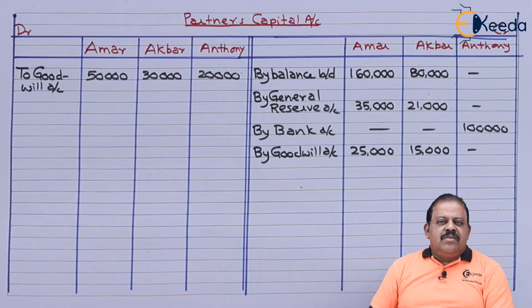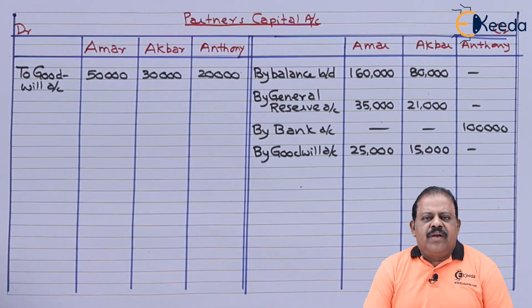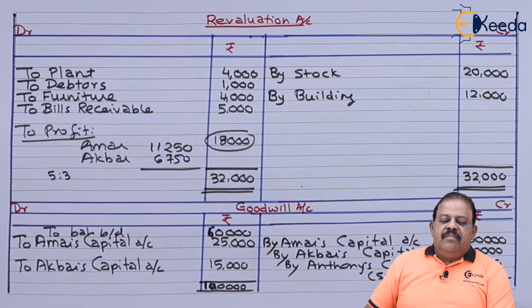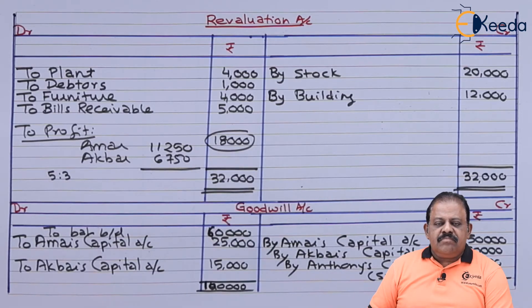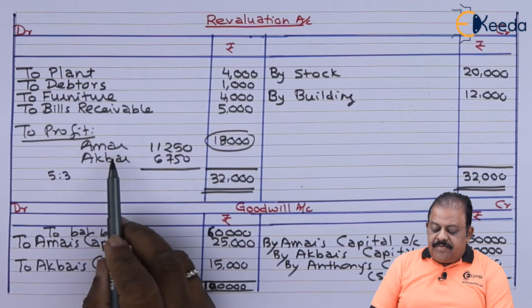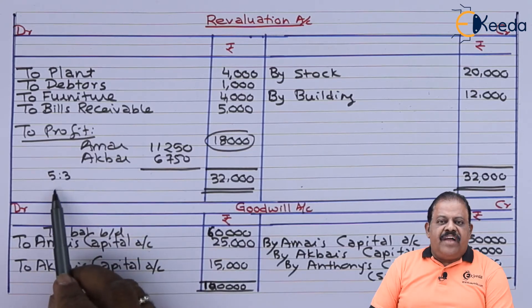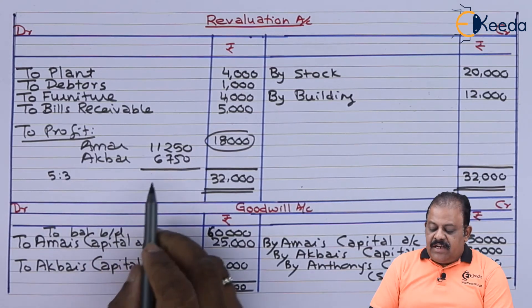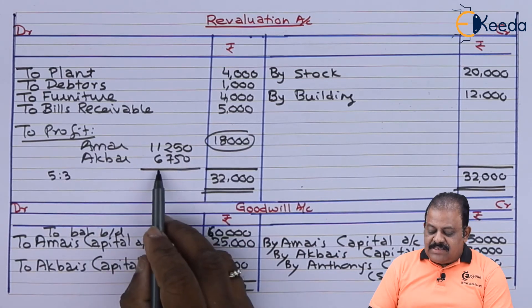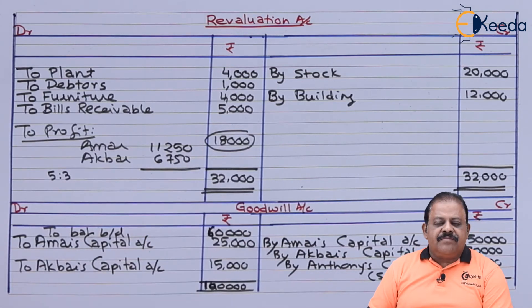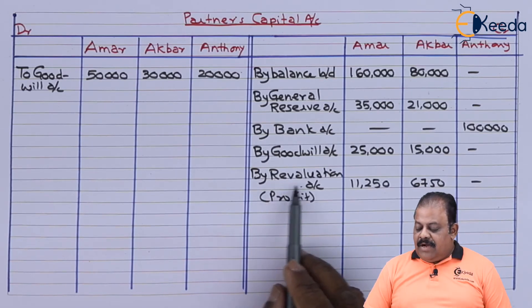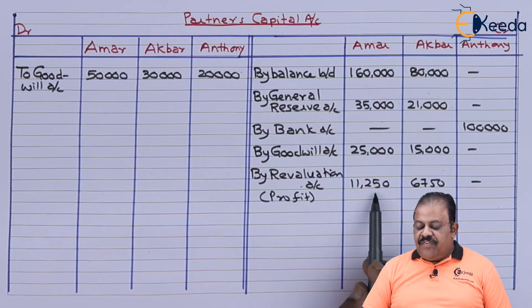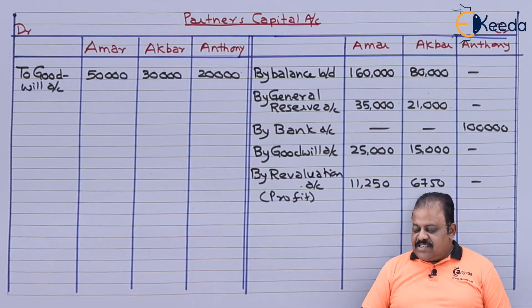That means goodwill will not appear in the new balance sheet. Now we can close the revaluation account. We are getting a profit of 18,000. This will be distributed between old partners Amar and Akbar in old ratio 5:3. Amar will get 11,250 and Akbar 6,750. Revaluation profit transferred to partners' capital account credit side: Amar 11,250, Akbar 6,750.